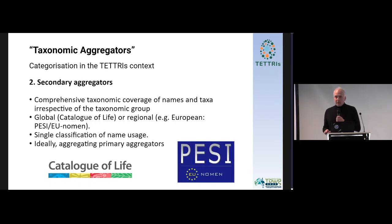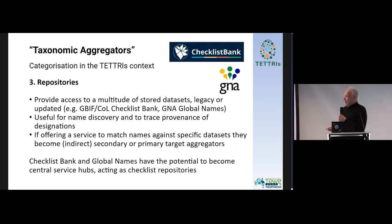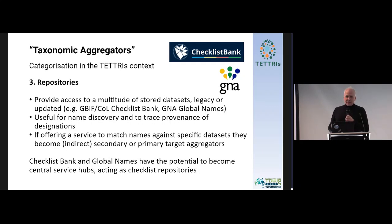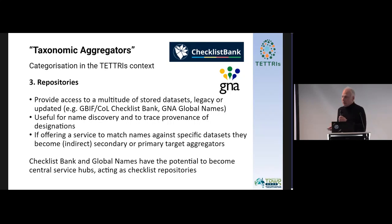Examples for secondary aggregators are Catalog of Life, or in Europe, the GBIF Nomen. I'm referring to Europe because it's a European project. In the TETRIS context, we also have a third category, which is repositories. They are essentially repositories with a user interface. They are very useful — for example, in Global Names I found names I didn't find anywhere else. If a service is there where you can direct your query to a specific dataset within the repository, then you get a primary or secondary aggregator function.